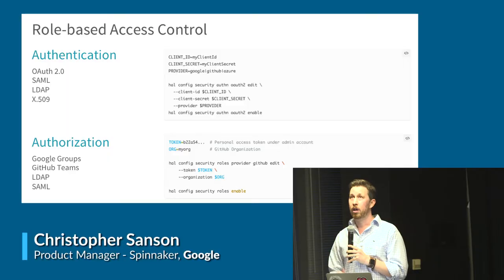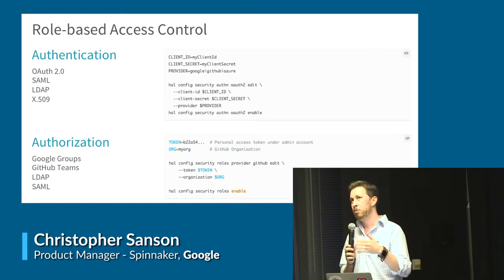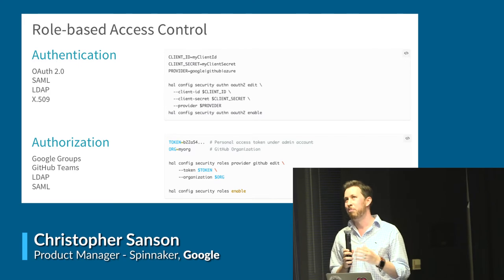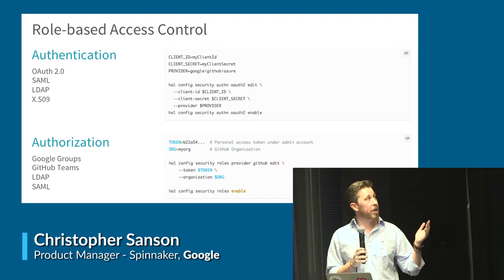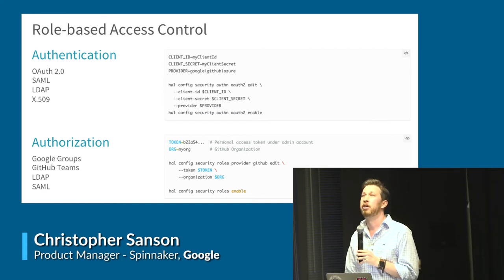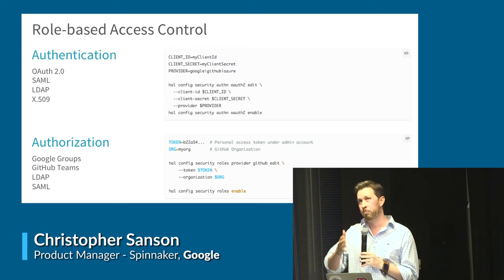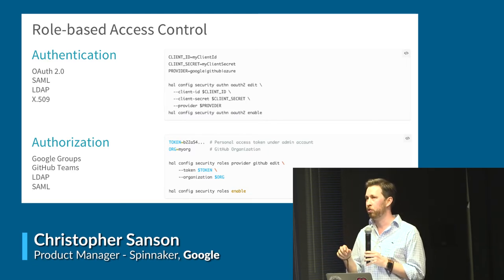We picked App Engine as a relatively simple example: you just run 'hal config provider appengine,' set your environment variables, and off you go. The last big thing we added was role-based access control. Netflix is a pretty open organization, but before, if you logged into Spinnaker you could see everything. Many organizations don't work that way - some have regulations, some have corporate culture requirements. With Fiat, the microservice controlling this, we added authentication and authorization. OAuth is recommended for authentication; authorization leverages Google Groups, GitHub Teams, LDAP, SAML, etc.